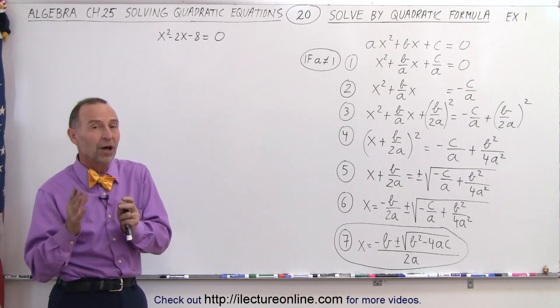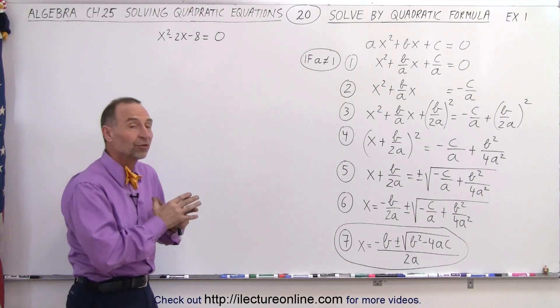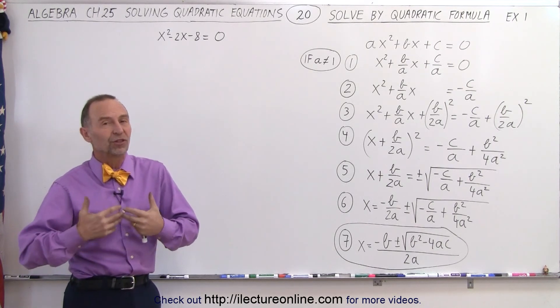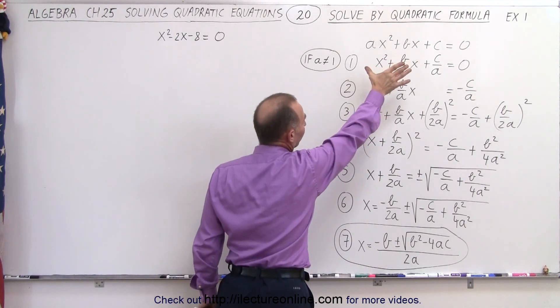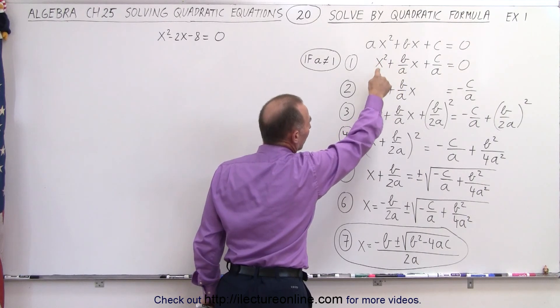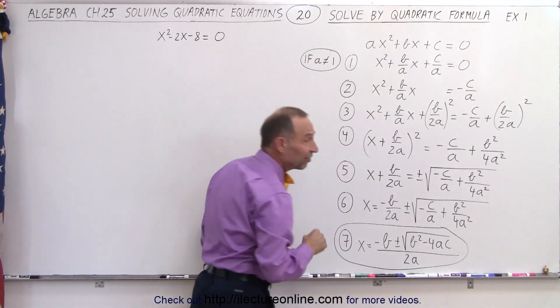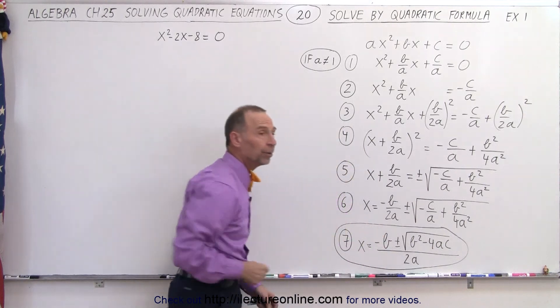In previous videos we saw how the quadratic formula was derived. It was derived by using the general case of the completing the square method. Starting with a general form of the equation, when we went through the following seven steps, we ended up with the quadratic formula.